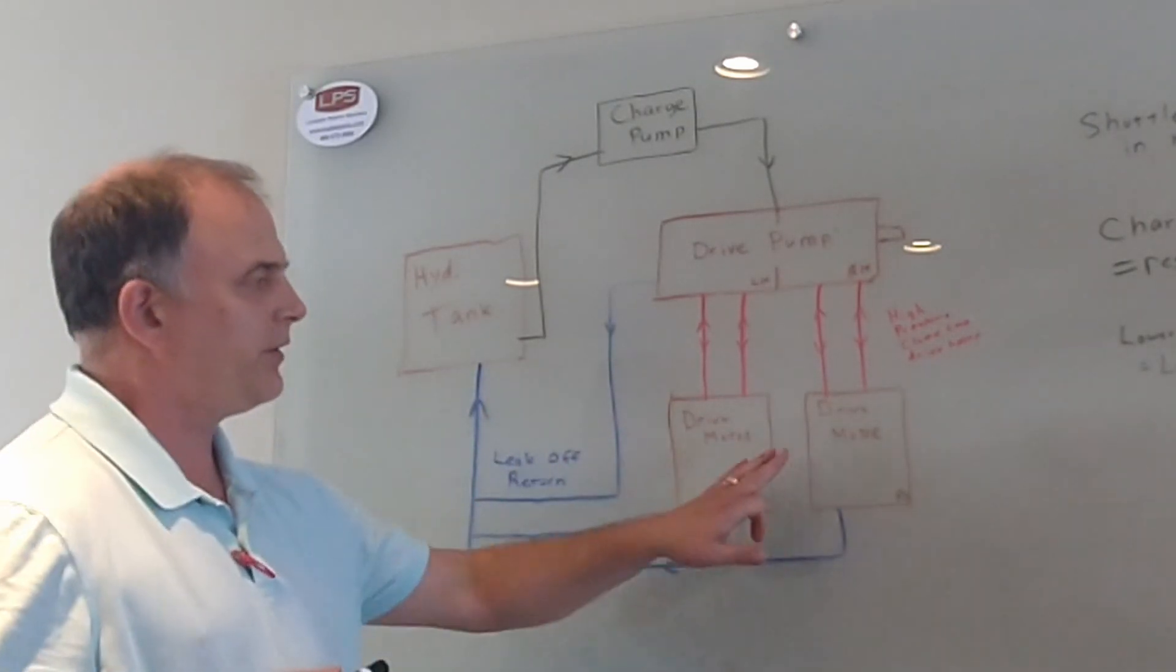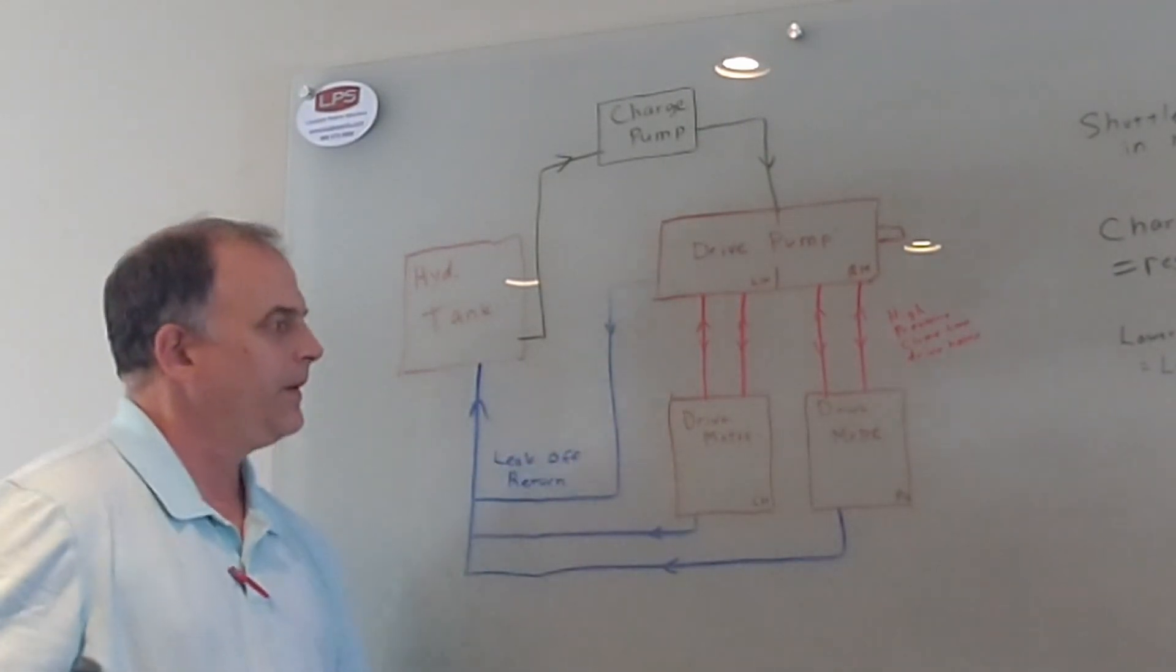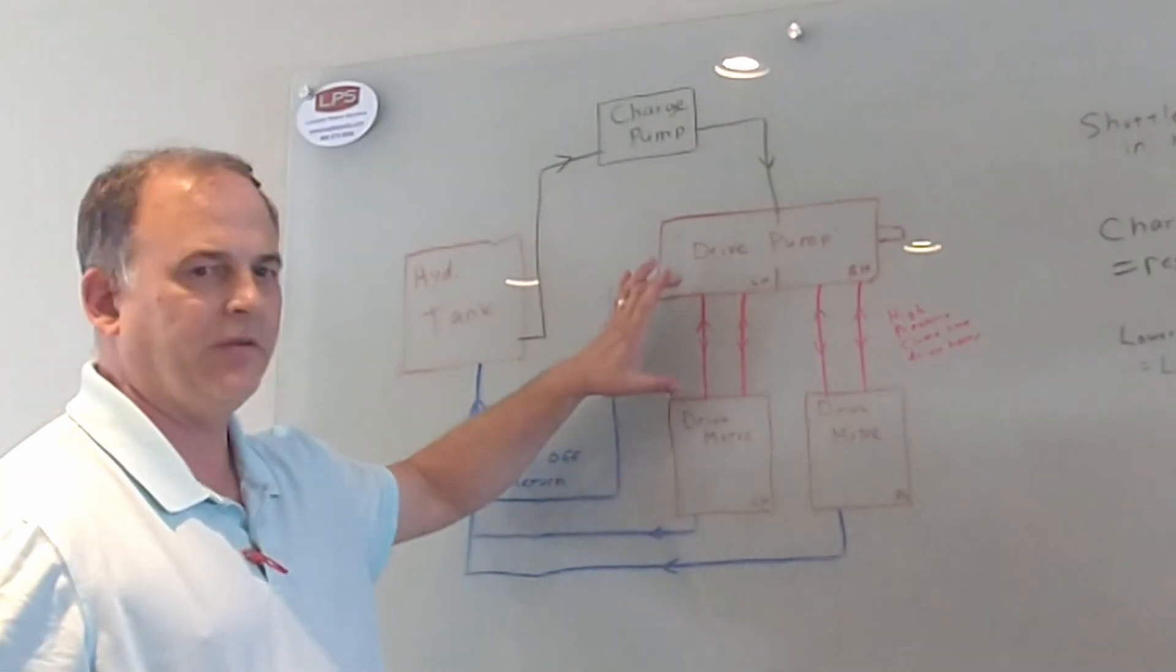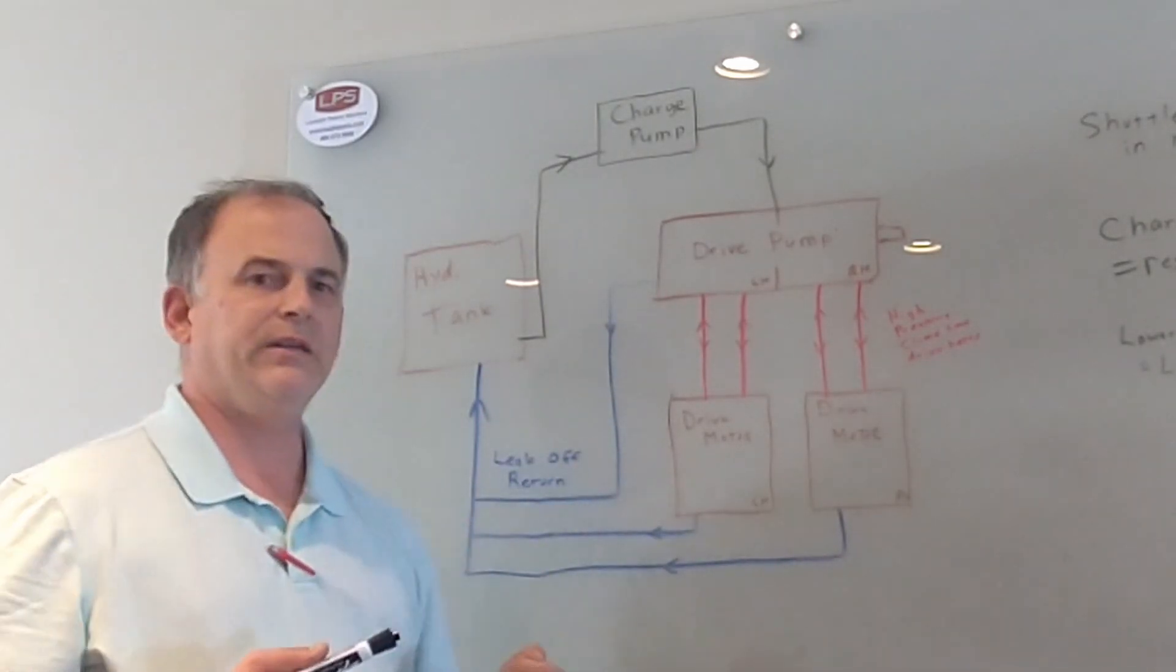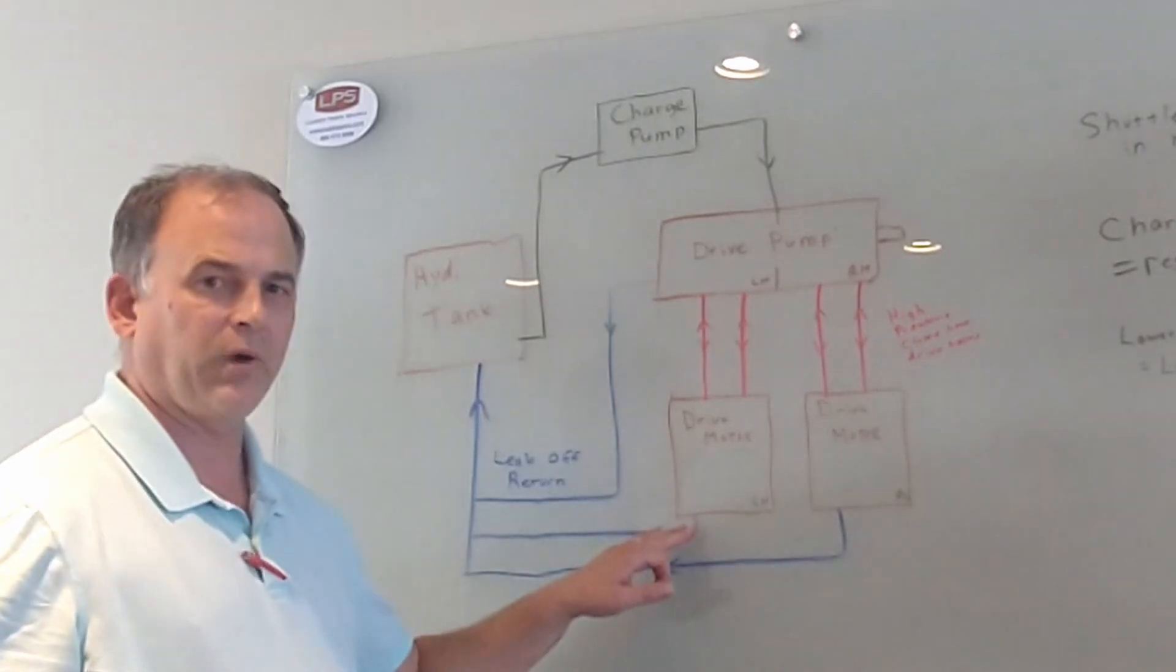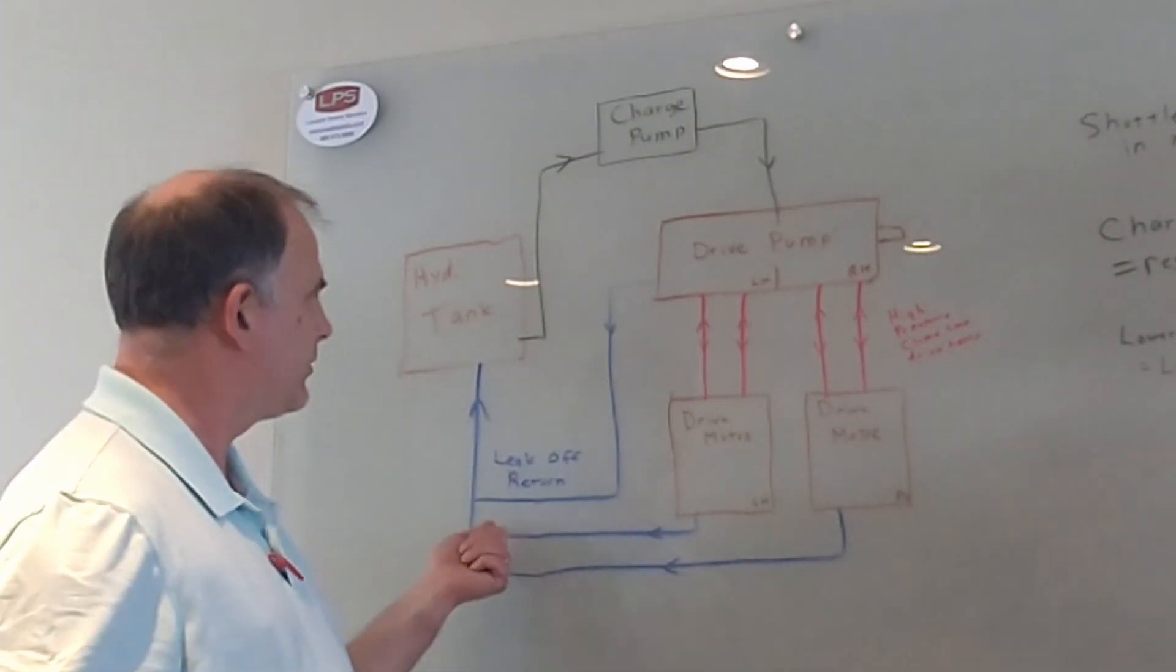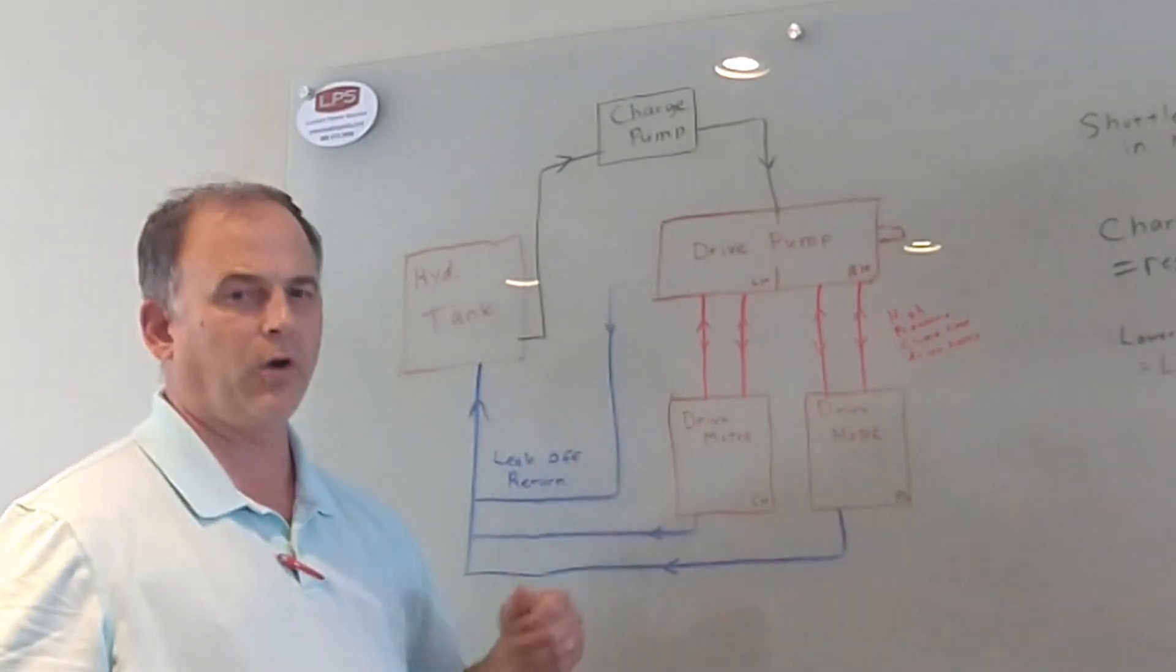In the skid loader there's two sides, so you have a right and a left. But it's not quite that simple because efficiency isn't 100%, so you have some relief off. You need that for lubrication, you need cooling as well. So these motors have flushing valves in them to allow some of the hot dirty oil to escape and get replaced by clean filtered cooled oil.